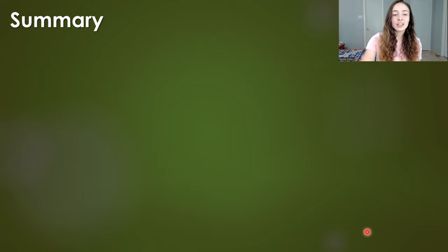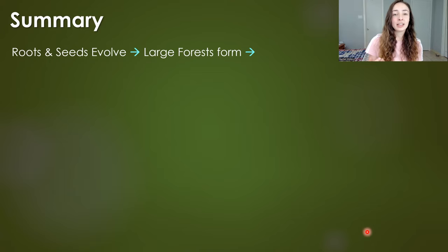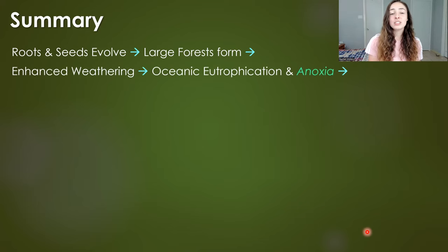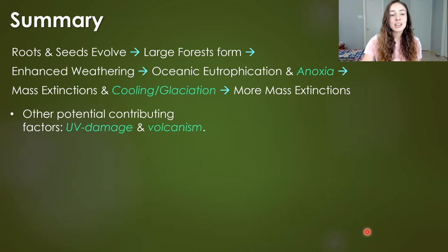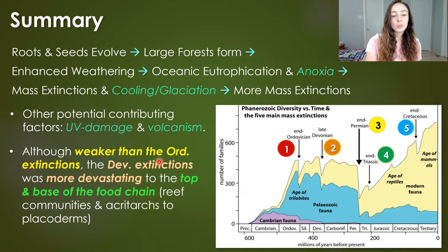As a summary: roots and seed plants evolved, large forests formed and spread throughout previously uninhabited regions, forming soils which enhanced weathering rates. That produced eutrophication and anoxia in the oceans due to nutrient flux and increased primary productivity, leading to mass extinctions. Cooling and glaciation due to enhanced weathering and carbon sequestration also led to mass extinctions. Other potential contributing factors include UV damage and volcanism.